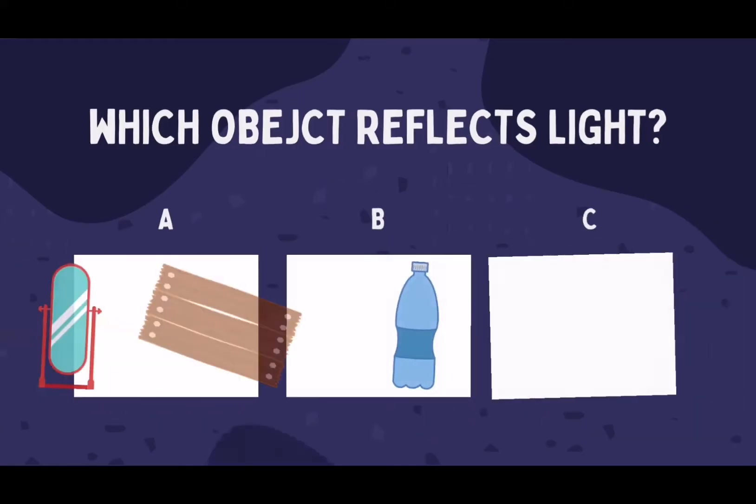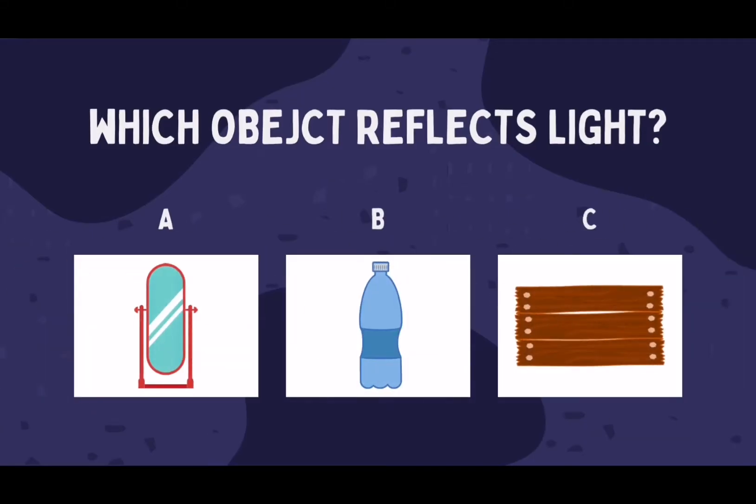Next, which object reflects light? A. Mirror, B. Plastic bottle, C. Flatwood.